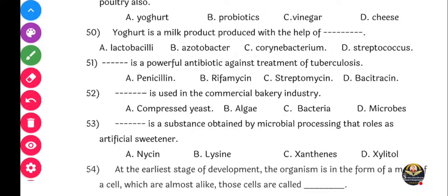Next question: Dash is a powerful antibiotic against treatment of tuberculosis. Tuberculosis cha treatment sati kaay vaapadla zaata? Options: Penicillin, Rifamycin, Streptomycin, or Bacitracin. Correct answer: Rifamycin, option B.